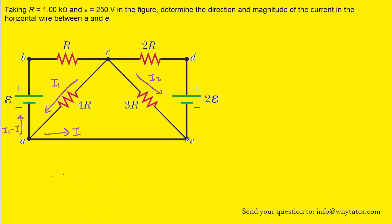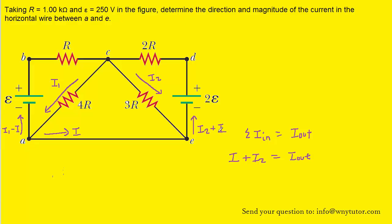If we come over here to junction E, we can see that the current marked I is entering that junction, and the current marked I2 is also entering that junction. Going back to the junction rule — which tells us that total current in equals total current out — the current in is I plus I2, and that equals the amount of current exiting the junction. Therefore, the amount of current coming out would be I plus I2, or I2 plus I. So we'll go ahead and label that current coming out of the junction.